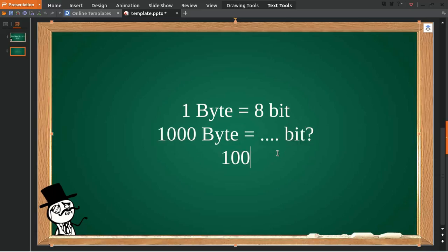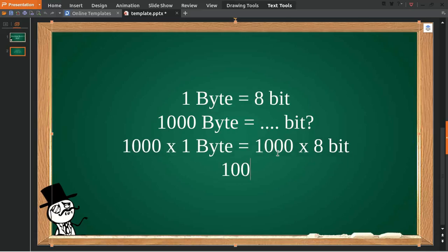First thing you need to do is you need to multiply 1000 and 1 byte and give it an equal sign, then multiply again 1000 with 8 bit. Okay, so 1000 byte, you must use a capital letter to write byte.